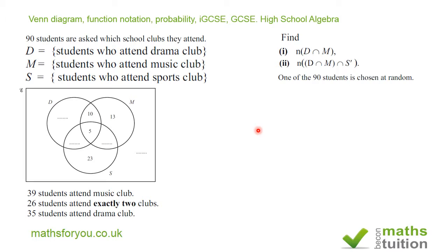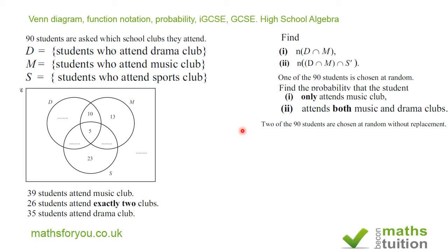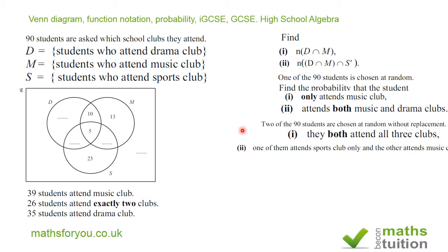One of the 90 students is chosen at random. Find the probability that a student only attends music club, and the probability that a student attends both music and drama clubs. Then: two of the 90 students are chosen at random without replacement — find the probability that they both attend all three clubs, and that one attends sports club only and the other attends music club only.